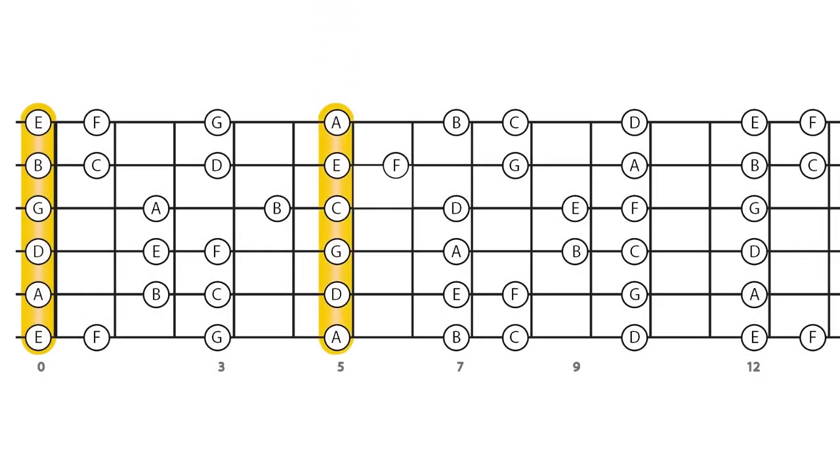The open strings, the fifth fret, and the tenth fret become axis positions where notes of the key of C line up. The eleventh fret has no notes belonging to the key, and the twelfth fret begins the system again.